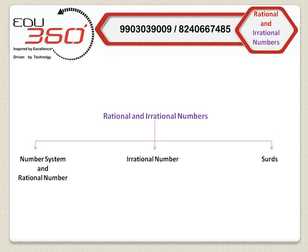There are basically three sections. First, number system and rational numbers. Second, irrational numbers. And third, surds. Now I will discuss number system and rational numbers.